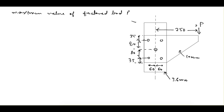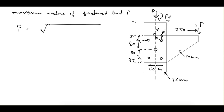We will find out the force on the extreme bolt. As discussed in the theory part, there is a direct shear force and a shear force due to the moment. P is the direct shear force, giving us two forces in the bolt: F1 and F2. F1 corresponds to P and F2 corresponds to PE. Then we find the net force F on the extreme bolt using F = √(F1² + F2² + 2·F1·F2·cosθ).